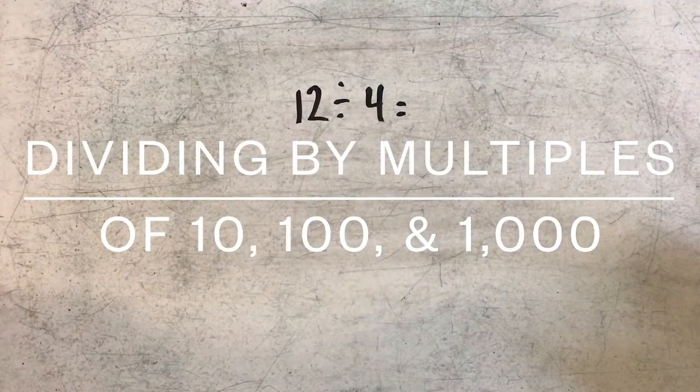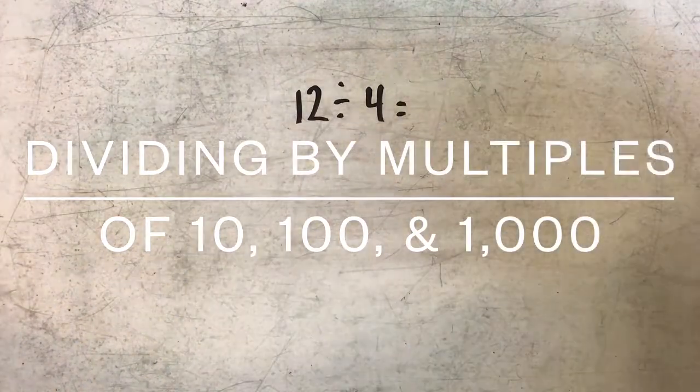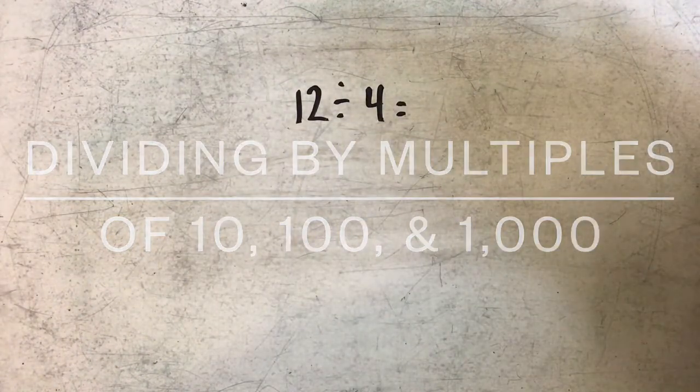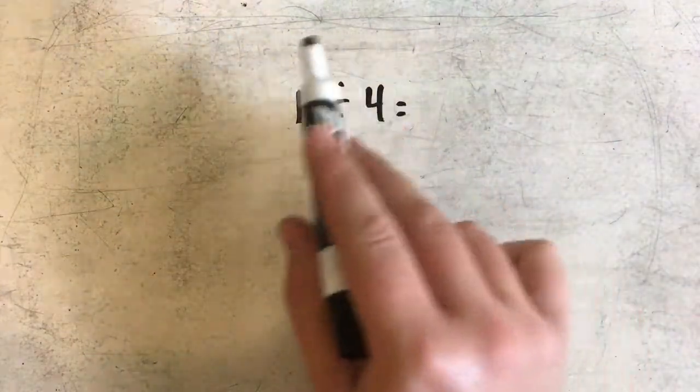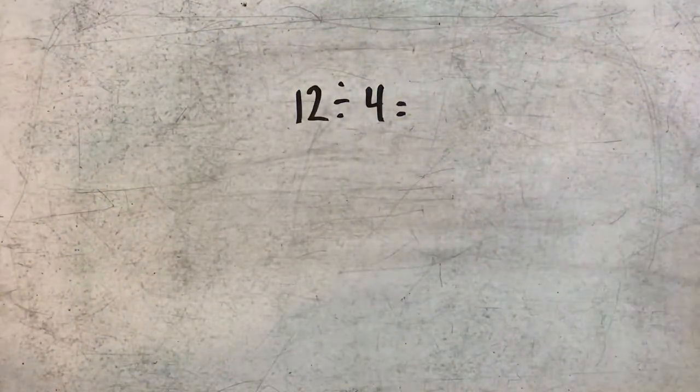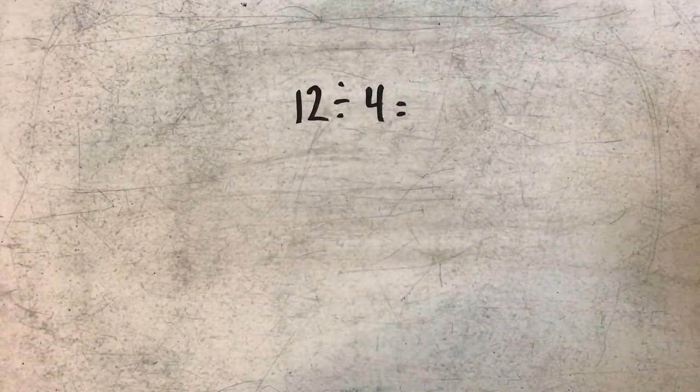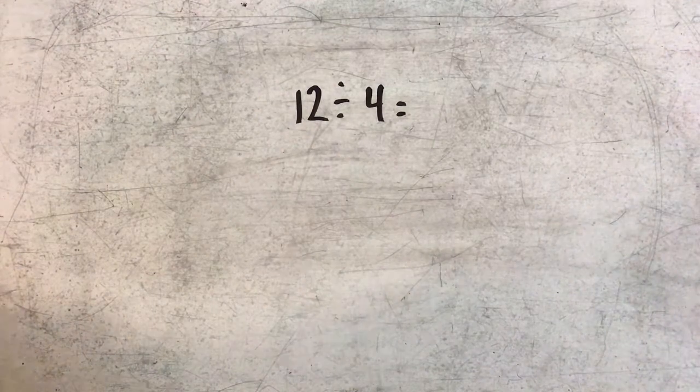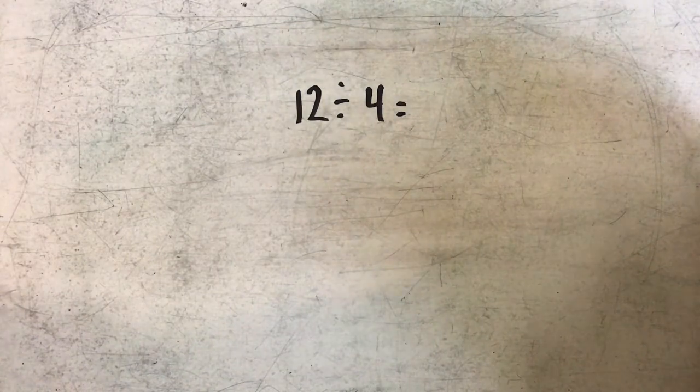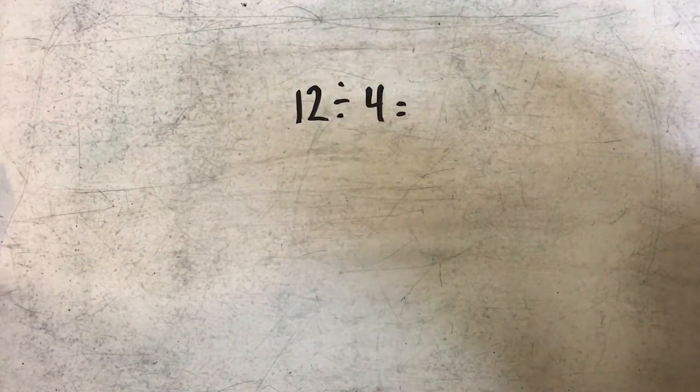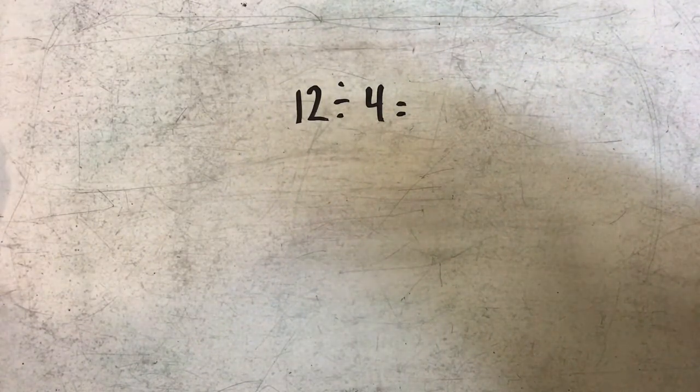When dividing by multiples of 10, 100, and 1,000, I'm going to look for basic facts to answer. Similarly to when I multiplied by multiples of 10, 100, and 1,000, I focused on the basic facts and left the zeros for the end of the problem after I had found my basic fact answer.